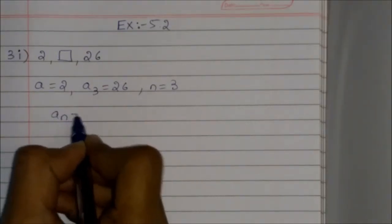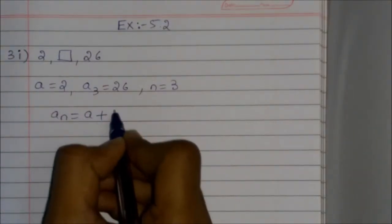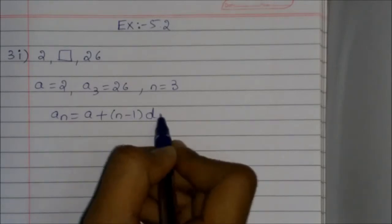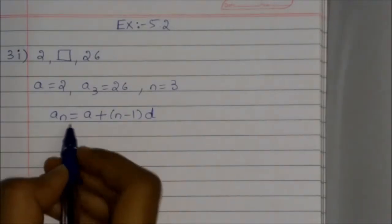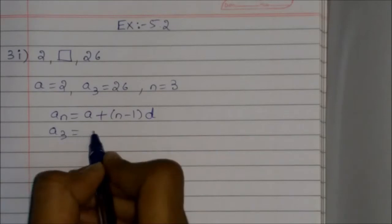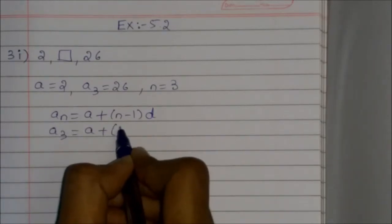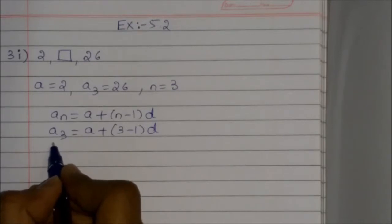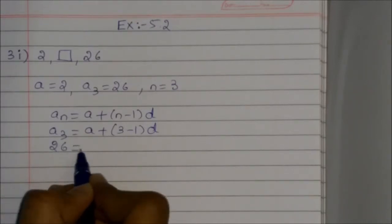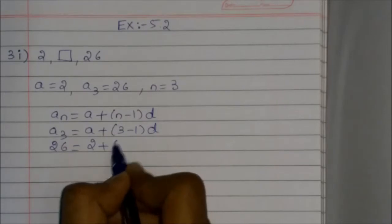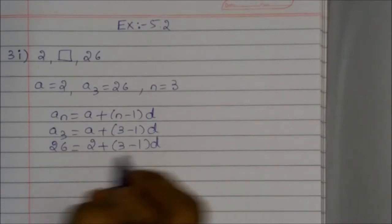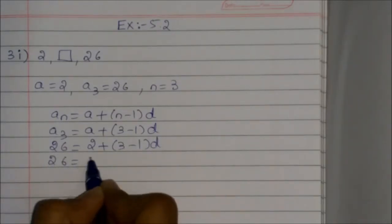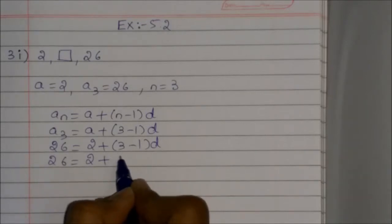We know that aₙ equals a plus (n minus 1) times d. So a₃ equals a plus (3 minus 1) times d. Substituting the values, 26 equals 2 plus (3 minus 1) times d.